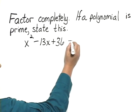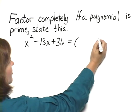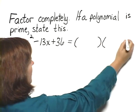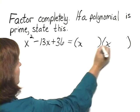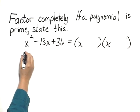If this factors, this will factor into the product of two binomials. And the first term in each binomial will be x, because the x times the x will give us the x squared.